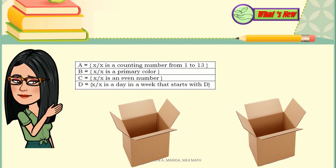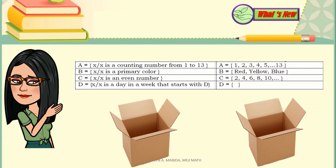Now let's check out the second box. Set A are numbers 1, 2, 3, 4, 5, and so on, 13. Set B are the colors red, yellow, blue. Set C are the numbers 2, 4, 6, 8, 10, and so on. Set D is a null set.